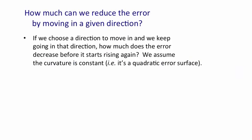When we're training the weights of a neural network, we're trying to get as far down the error surface as possible. So one question is, if we choose a given direction to go in, how much reduction in the error can we achieve by going just the right distance in that direction? How much does the error decrease before it starts rising again? Here we'll assume that the curvature's constant, i.e. we'll assume it really is a quadratic error surface.